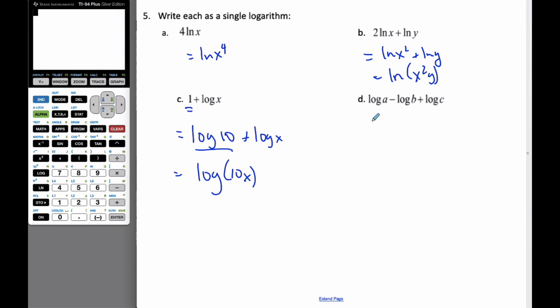And finally, I'm going to put this together. When I have log a minus, that means divide, plus log c, add means multiply, so it's going to be log ac over b. And there we have it.